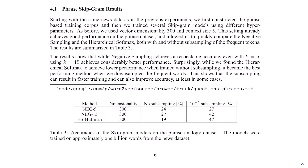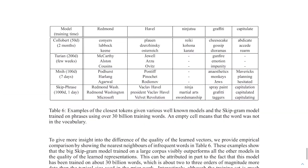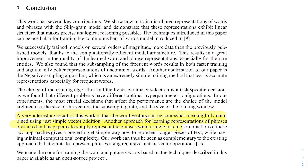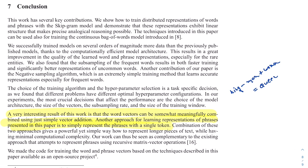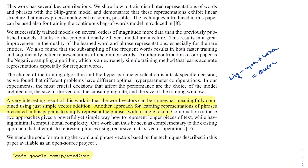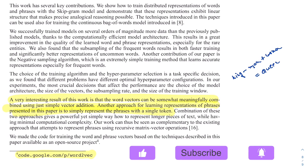To wrap up: word2vec's skip-gram with negative sampling produces meaningful word embeddings with minimal computational complexity. One of the most compelling results is word analogies — for example, taking the embedding for 'king,' subtracting 'man,' and adding 'woman' yields the embedding for 'queen.' The code is open source, and links to it along with recommended blogs on word2vec are provided in the description. Thanks for watching!